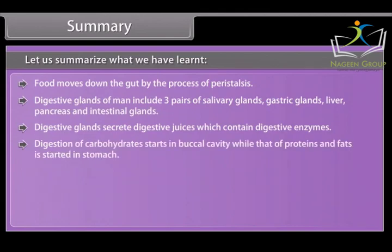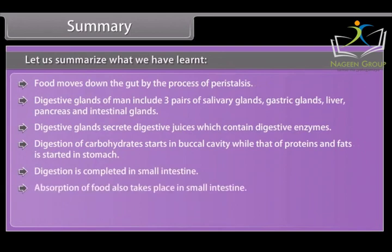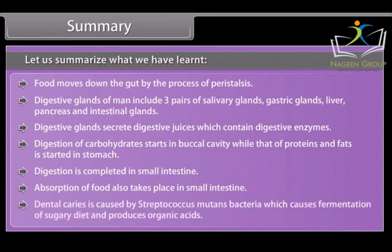Digestion of carbohydrates starts in the buccal cavity, while that of proteins and fats is started in the stomach. Digestion is completed in the small intestine, and absorption of food also takes place in the small intestine. Dental caries is caused by Streptococcus mutans bacteria, which causes fermentation of sugary diet and produces organic acids.